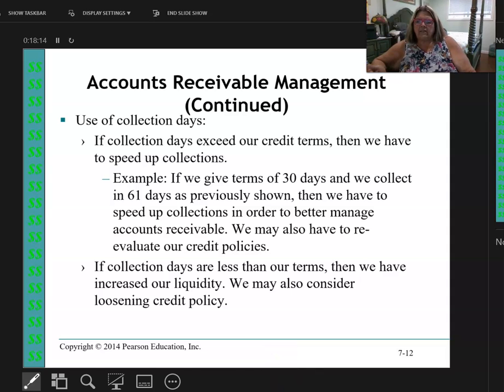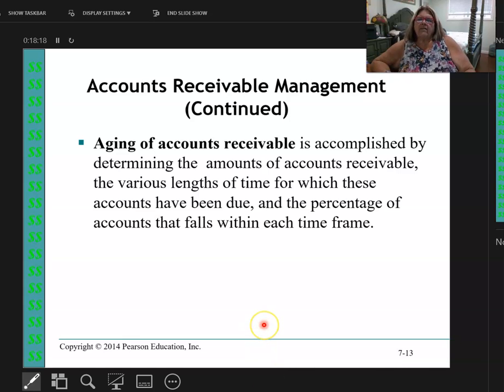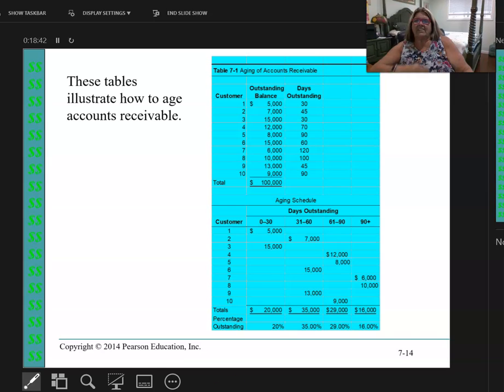Now we have something called, there's a report in accounts receivable if you've ever worked in this, it's called aging of accounts receivable. And it's a report that generates everybody who owes me money, how much they owe me, and when it's due. So I can actually know who's not paying, who should I be calling, and this type of stuff. And the report looks similar to this.